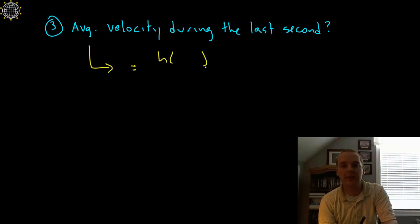So the last second if it ends or hits the ground at 5.89 seconds, then one second before that would be 4.89 seconds. So I'd want to find the height at 5.89 seconds minus the height at 4.89 seconds.